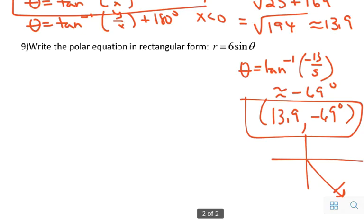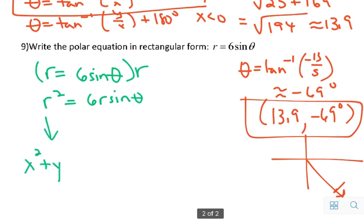The last thing we talked about was writing polar equations in rectangular form and rectangular equations in polar form. To write a rectangular equation like r equals 6 sine theta in rectangular form, what we're going to do is we're going to multiply both sides by r. The reason we're going to do that is because we can replace r squared with x squared plus y squared, and r sine theta is the same as y.